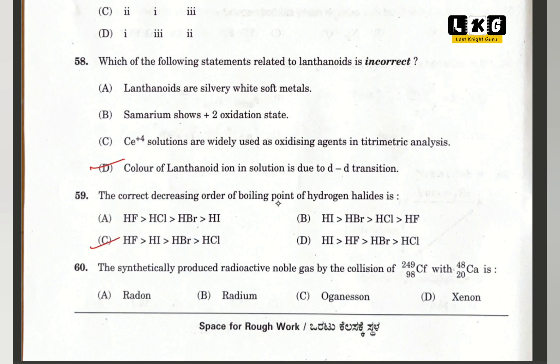The last question number 60: a synthetically produced radioactive noble gas, formed by collision of two elements — option C is correct. So these are the key answers for chemistry KCET 2024. I hope you did really well in your exams. Thanks for watching, and please share this video.